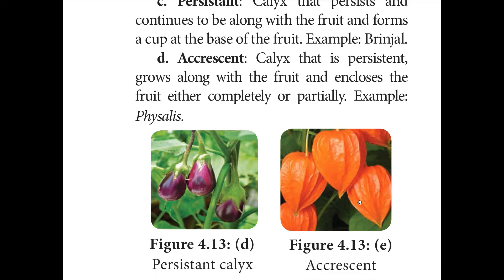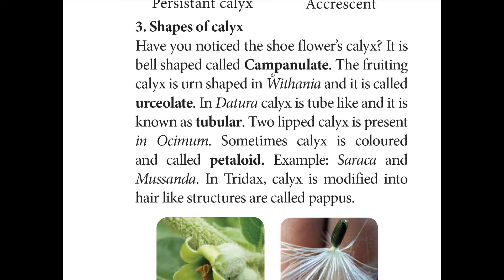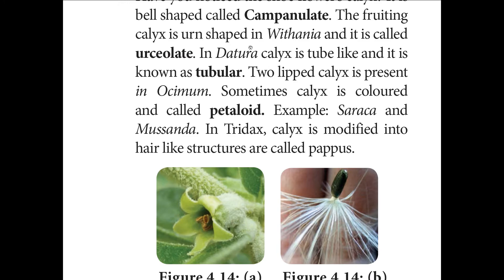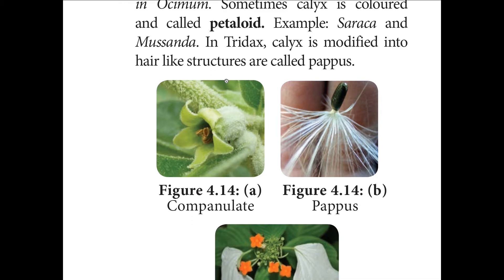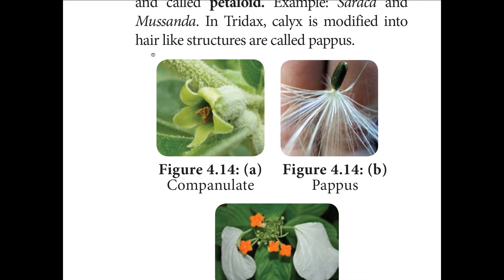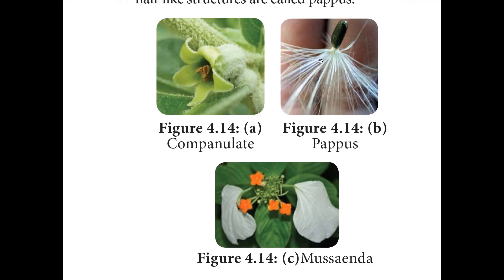Based on shape, calyx is classified as: campanulate if bell-shaped; urceolate if urn-shaped — example: Withania; tubular if tube-like — example: Datura; lipped as in Ocimum. Sometimes calyx is coloured and called petaloid — example: Saraca and Mussaenda. In Tridax, calyx is modified into fine hair-like structures called pappus.